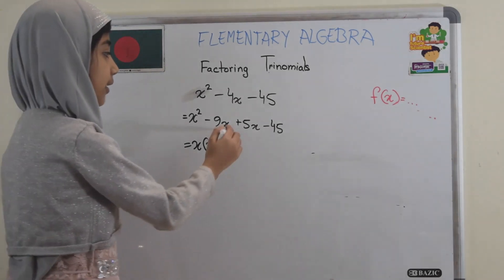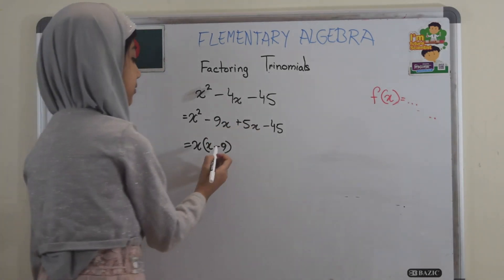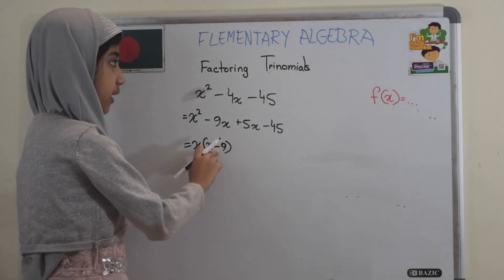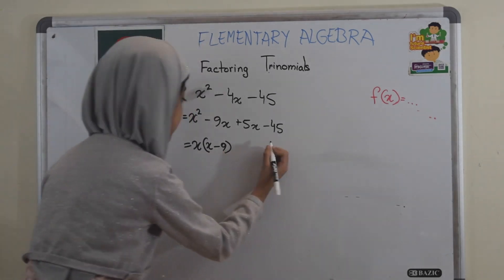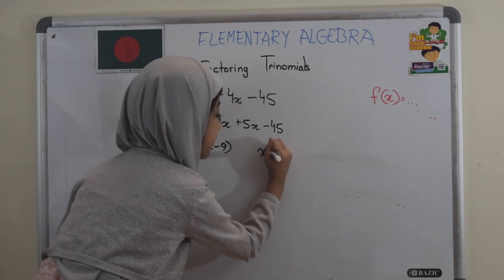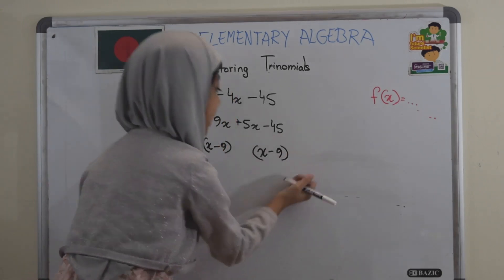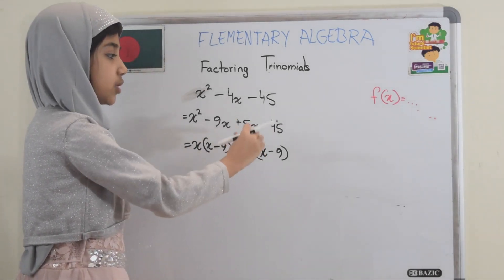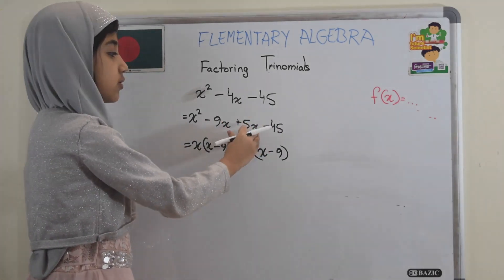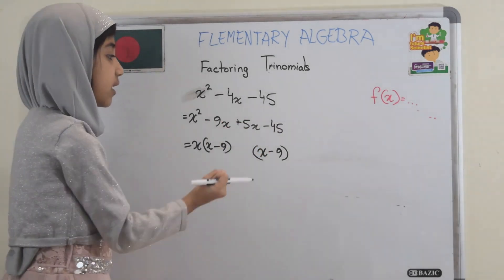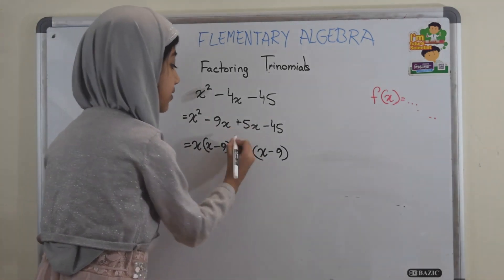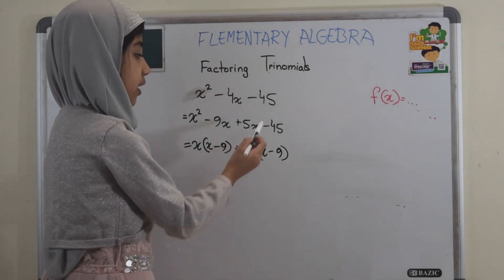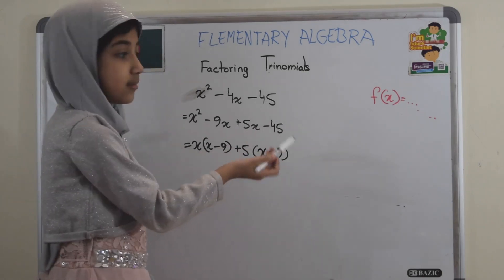Now for these two, here is one of my binomials, so I've got to put the same binomials in the bracket, but I have to see which common numbers or common letters I can take as a common. So here we can see that we can take plus 5 because plus 5 times minus 9 is minus 45.